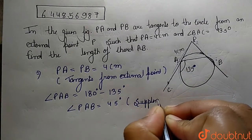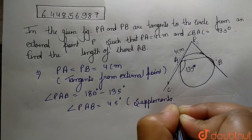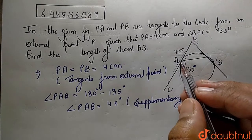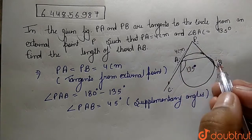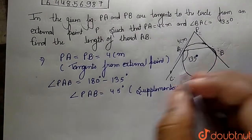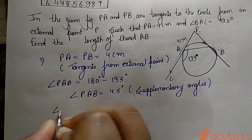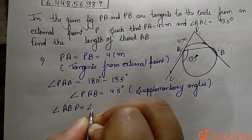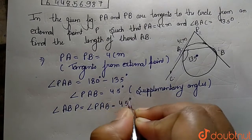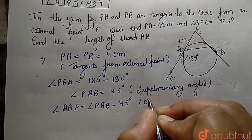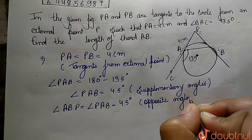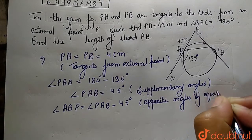For the next step, the value of angle ABP equals angle PAB, and both angles are equal to 45 degrees. This is because they are opposite angles of equal sides, since PA equals PB.